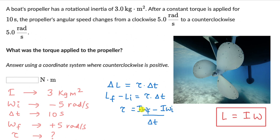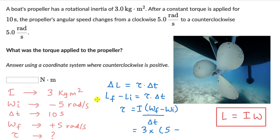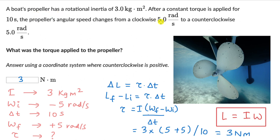Taking I as common: τ = I·(ωf - ωi) / Δt. Substituting: I = 3, ωf = +5, ωi = -5, so ωf - ωi = 5 - (-5) = 10. Then τ = 3 × 10 / 10 = 3 Newton meters. So the torque applied over 10 seconds changed the boat's propeller angular speed from -5 to +5 rad/s.